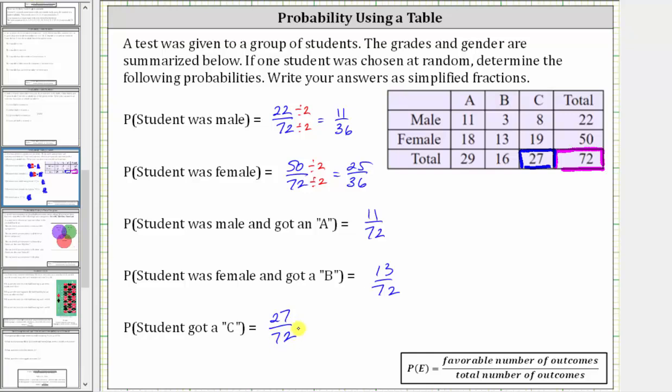But this does simplify. The greatest common factor between 27 and 72 is nine. To simplify, we divide both 27 and 72 by nine. 27 divided by nine is three. 72 divided by nine is eight. The simplified probability is 3/8.